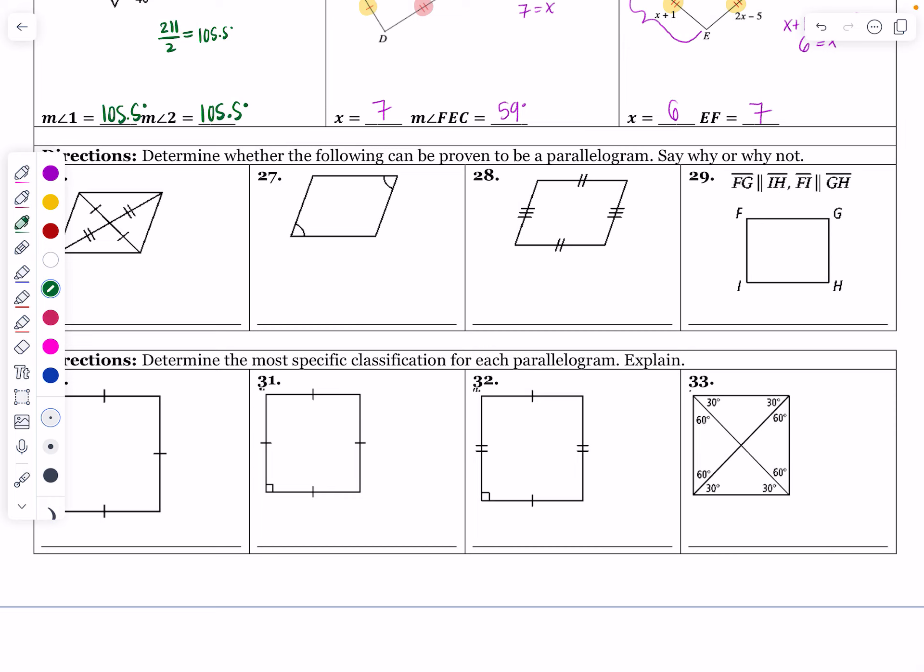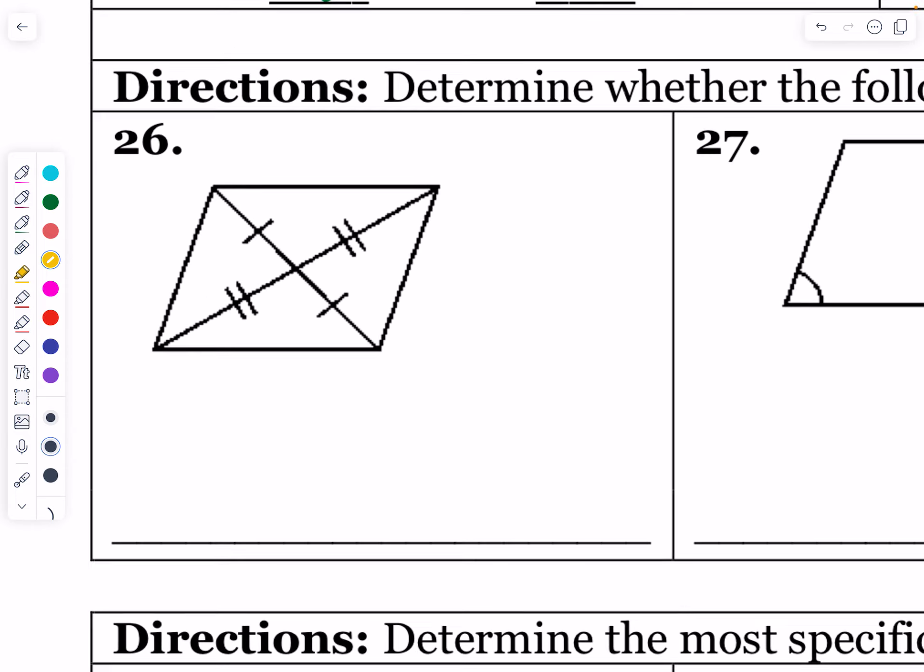The next set of directions for questions 26 through 29 state to determine whether the following can be proven to be a parallelogram. All we're trying to prove here is that each of these shapes is a yes or a no - is it a parallelogram or not based on just what's given?